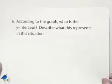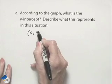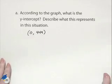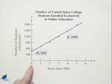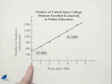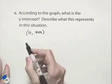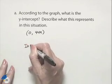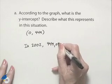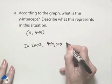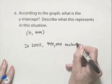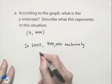So how do we interpret that? Well, the 0, 449. And we were told that this 0 corresponded to the years after 2002. So if there's 0 years after 2002, that means it's in the year 2002. So in 2002, we had 449,000 students exclusively enrolled in online education.